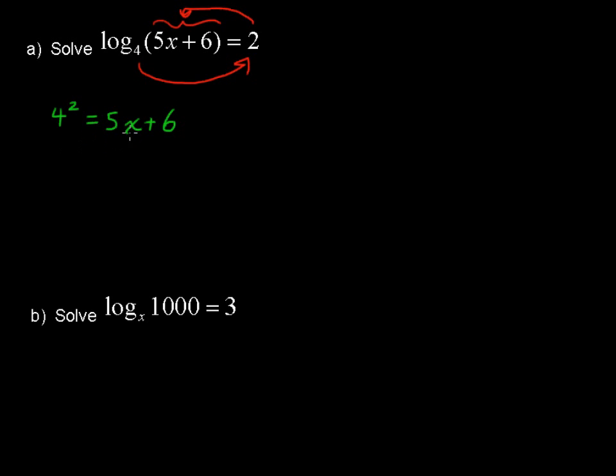Now we have an equation, it's a linear equation, that we can just solve for x. 4 squared is 16, that equals 5x plus 6. Subtract 6 from each side and you get 10 equals 5x. And then you're left with x equals 2.